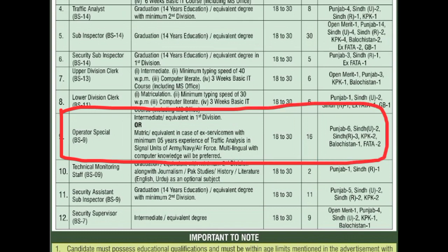Operator Special, scale 9 — qualification: intermediate or equivalent in first division; या matriculation and equivalent in case of ex-servicemen, with minimum 5 years experience of traffic analysis in signal units of Army, Navy, or Air Force। Multilingual with computer knowledge will be preferred। Age limit: 18 to 30 years। 16 vacancies: Punjab की 6, Sindh Urban की 2, Sindh Rural की 3, KPK की 2, Balochistan की 1, FATA की 2।